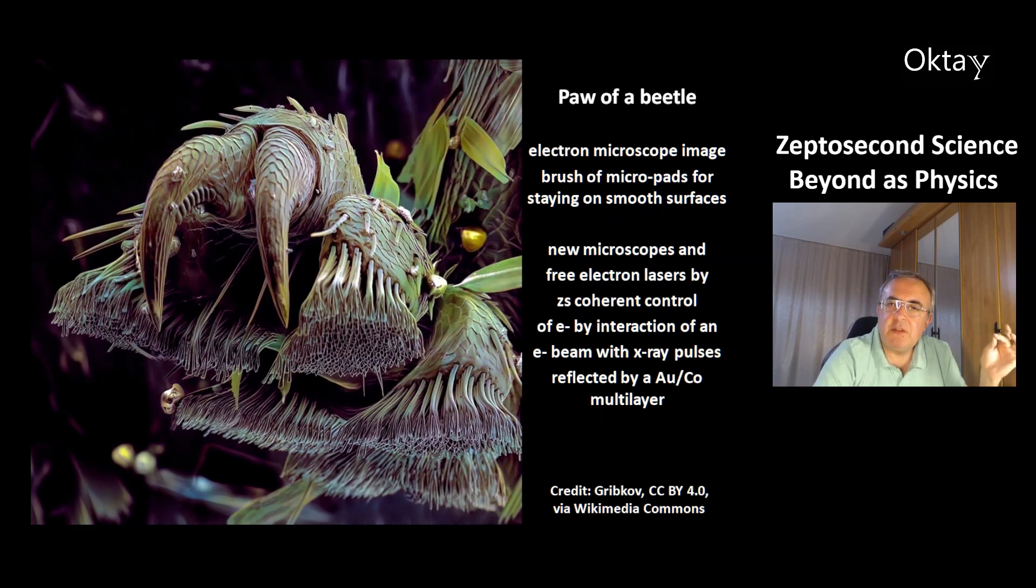This is a very beautiful picture of the pore of a beetle. It's an electron microscope image. You can see nicely these brushes. They are made of micropads. They allow the beetle to stay on smooth surfaces. New microscopes and free electron lasers are possible by zeptosecond coherent control of an electron, by interaction of an electron beam with X-ray pulses that are reflected from a multi-layer made of gold and cobalt.